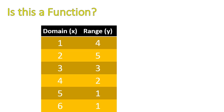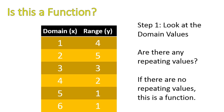So here is a table. And our job is to ask, is this a function? To do that, you look at the domain or the x values. Just look at those values in the domain: 1, 2, 3, 4, 5, 6. Are there any repeating values? If there are no repeating values, then this is a function. Because every time I input 1, I get out 4. I'm not inputting 1 and getting out something different. I input 2, I'm going to get 5. I input 3, I'm going to get 3. You see that for every 1 domain value, there's 1 range value.